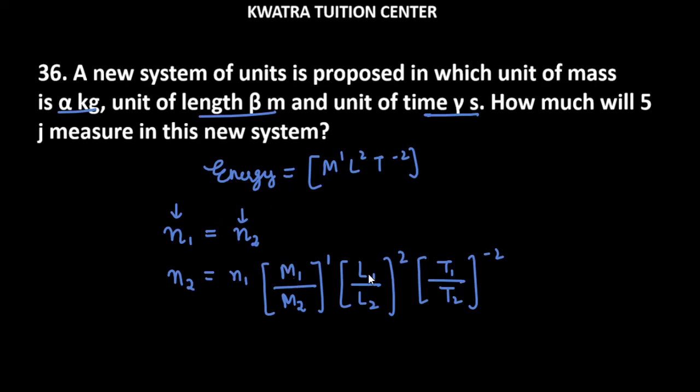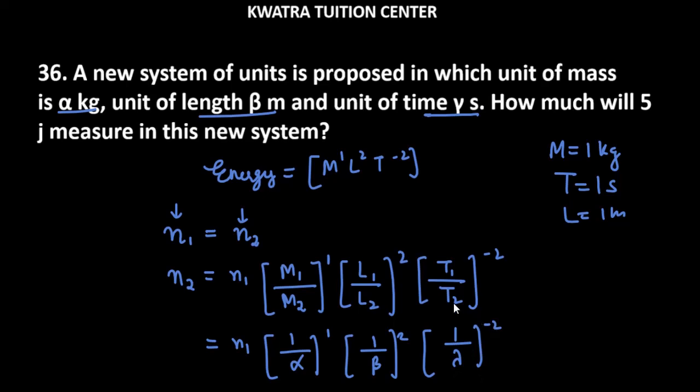We will write that our M1, L1, and T1 all have values of 1. 1 kg mass, T is 1 second, and the length is 1 meter. So you will write n2 equals n1 times M1 is 1, 1 over M2 where M2's value is alpha raised to power 1, and then L1 over L2 is 1 over beta raised to power 2, and T1 over T2 is 1 over lambda raised to power minus 2.